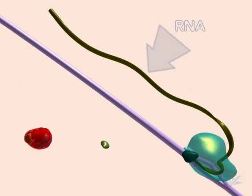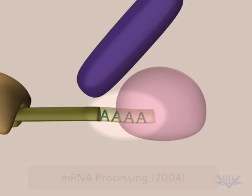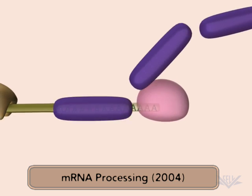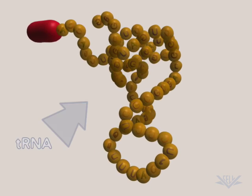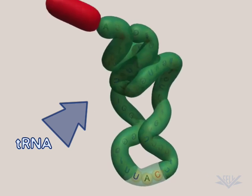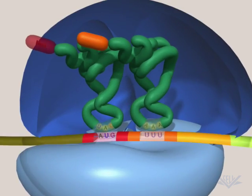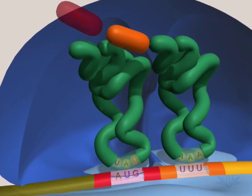The final product of transcription is then spliced and modified into one of three RNA molecules: messenger RNA, or mRNA, transfer, or tRNA, and ribosomal, or rRNA. These are all important components of the process called translation that is used to make proteins.